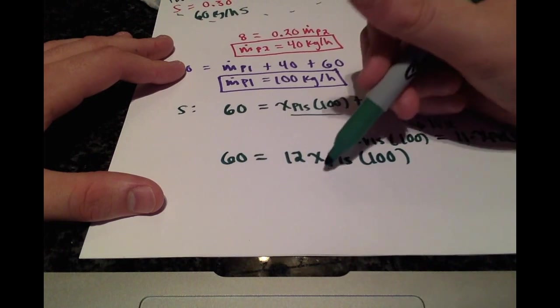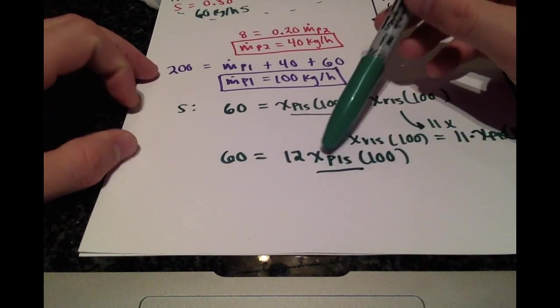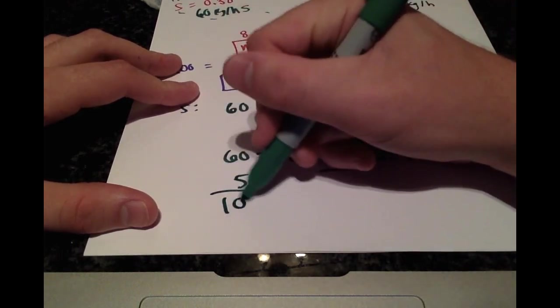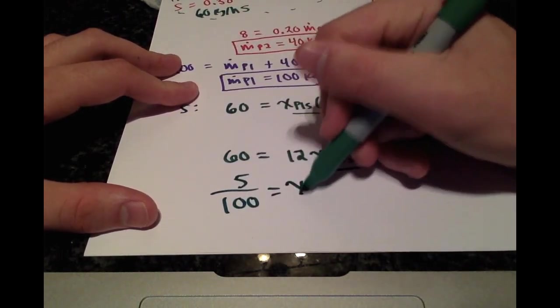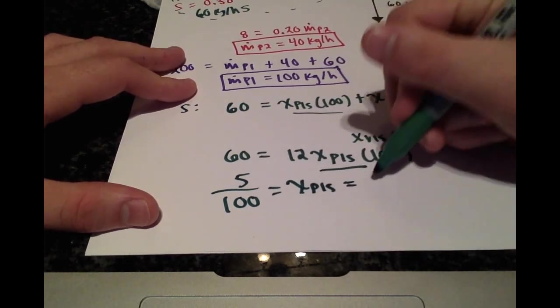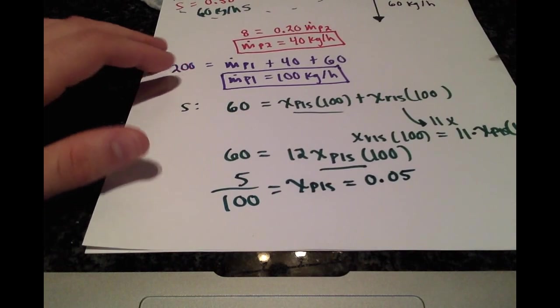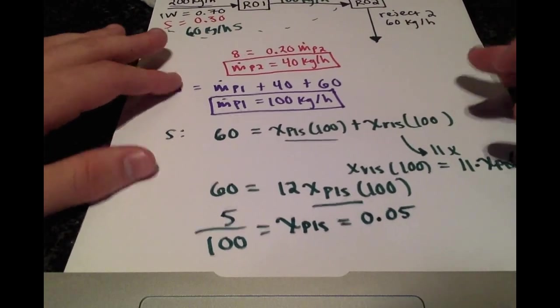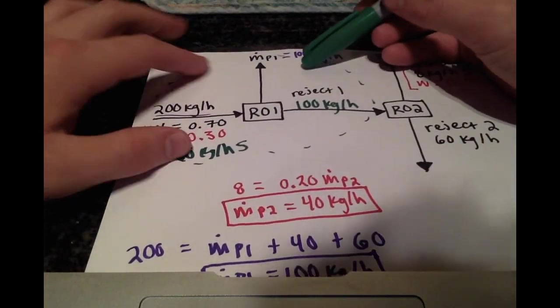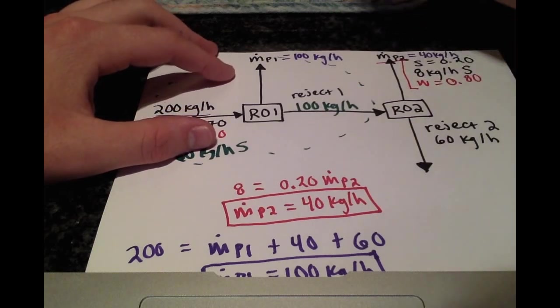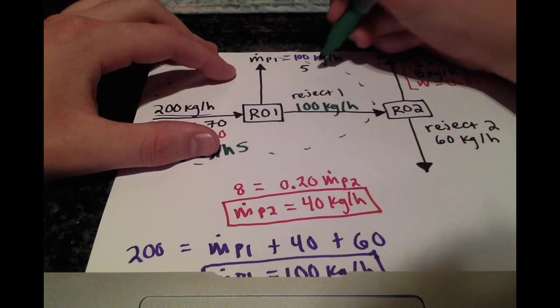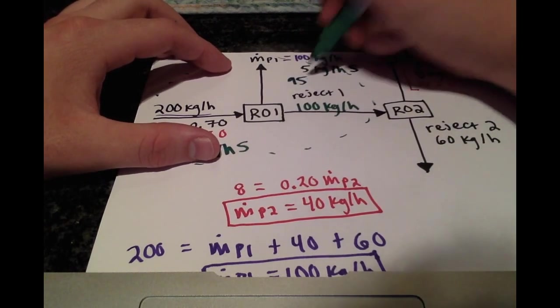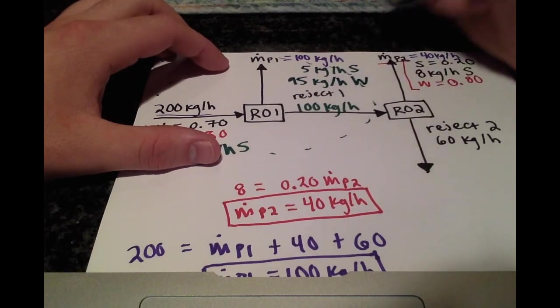Now we can solve for the fraction of the salt in permeate stream 1. Dividing this over, we get 5. Dividing the 100, we get 5 over 100 equals XP1S, and that's equal to 0.05. This is really useful because we can begin to fill in a lot of information. If this mass fraction here is 0.05, that means out of 100, there's 5 kilograms per hour of salt and then left over, there's 95 kilograms per hour of water.